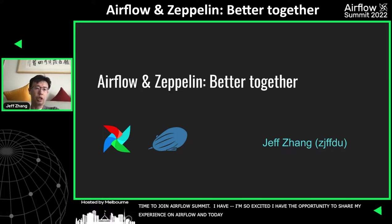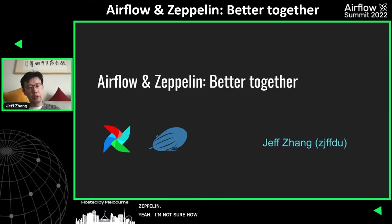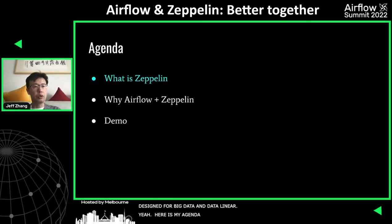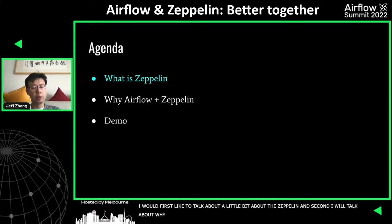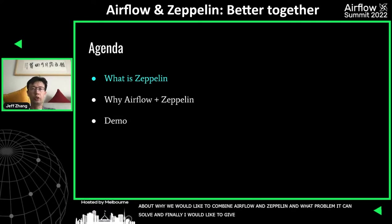Today I'm going to talk about two Apache projects: Airflow and Zeppelin. I'm not sure how many of you have heard of Zeppelin. Zeppelin is a notebook which is designed for big data and data engineering. Here's my agenda: first, I'd like to talk a little about Zeppelin. Second, I'm going to talk about why we'd like to combine Airflow plus Zeppelin and what problems it can solve. Finally, I'd like to give you a demo to demonstrate how Airflow and Zeppelin work together and give you a very intuitive impression.